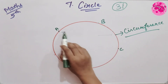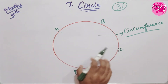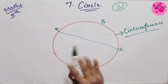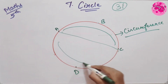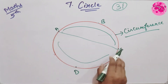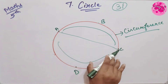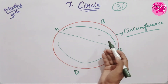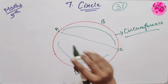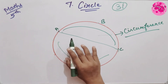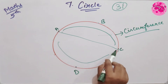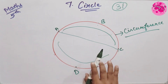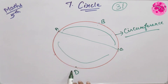In the given circle, A and C are the two points on the circle. These two points divide the circle into two parts. Each part is called an arc of the circle. Point A and C are the endpoints of both the arcs. So arc ABC and arc ADC are the two arcs in this figure.